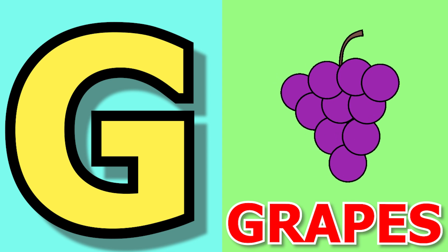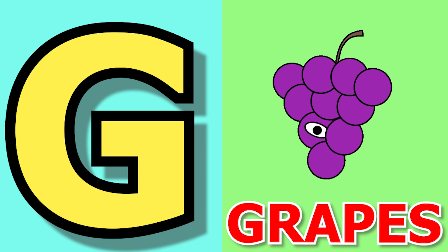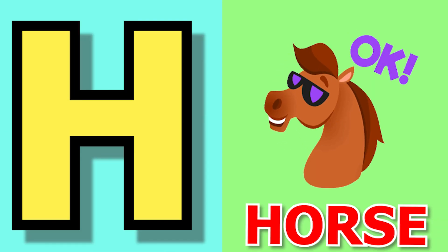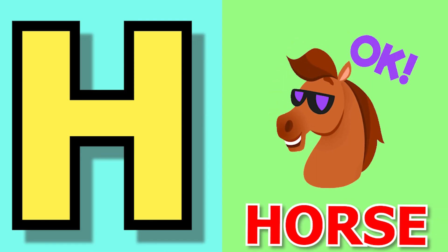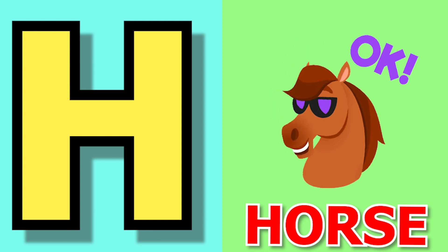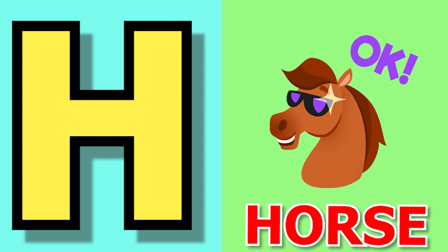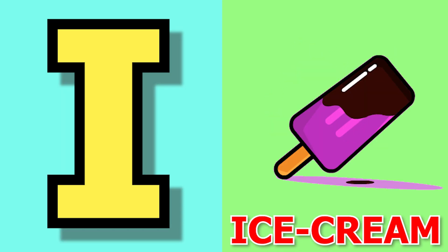G for grapes, grapes means angoor. H for horse, horse means ghoda. I for ice cream, ice cream means ice cream.